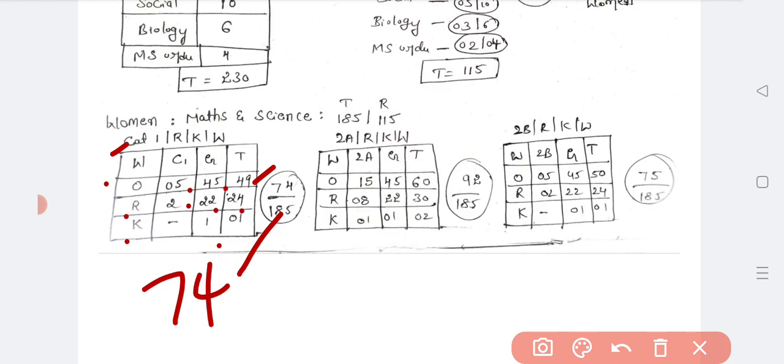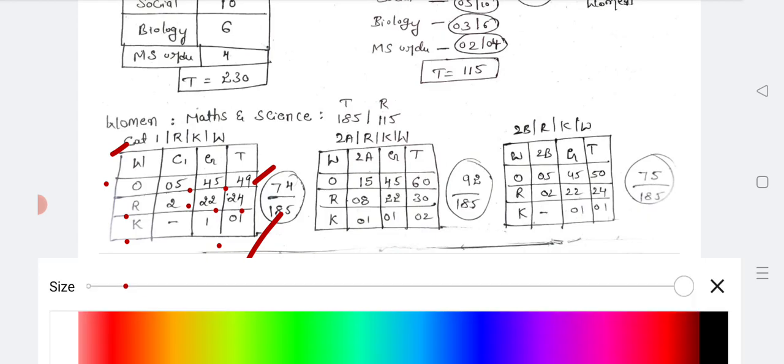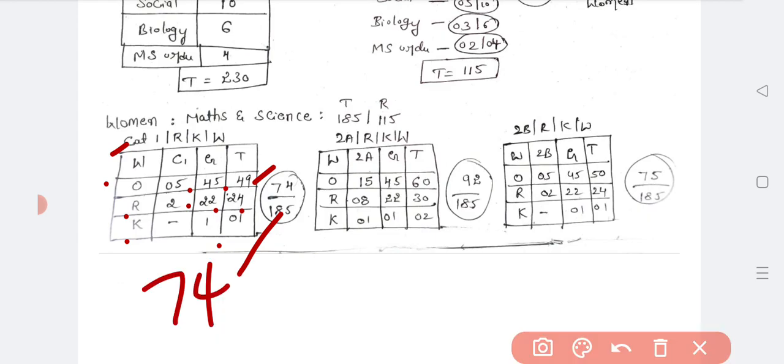Similarly, 2A category: same rural Kannada medium women quota. Others 2A 15, general 45, totally 60. Rural 8 plus 22, 30. Kannada medium 1 plus 1, 2. So totally 92 are reserved for 2A category rural Kannada medium women candidates out of 185. The denominator 185 is common in all cases, only the category is changing.